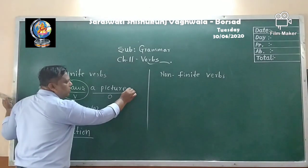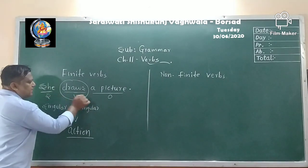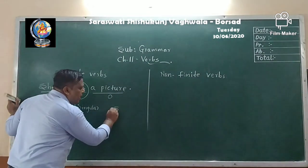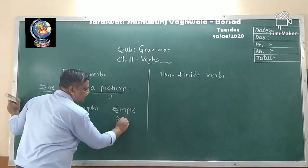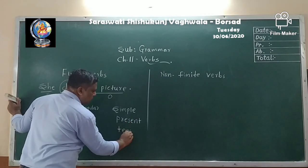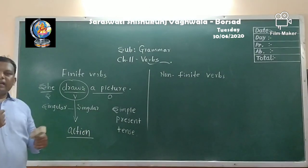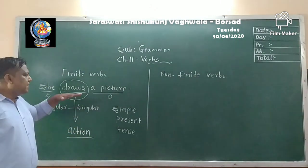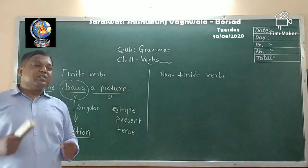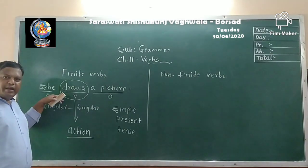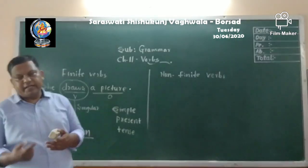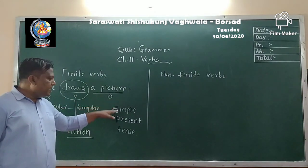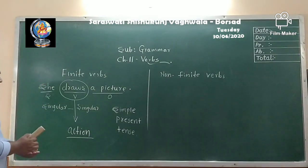In order to find out whether a sentence has a finite verb, we look at whether the verb has a tense. Here 'she draws a picture' is in simple present tense. When a sentence has a tense and an action verb, the verb is a finite verb. Subject plus verb plus object, and the sentence has a tense — in this case, simple present tense.